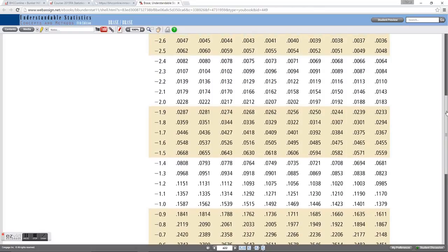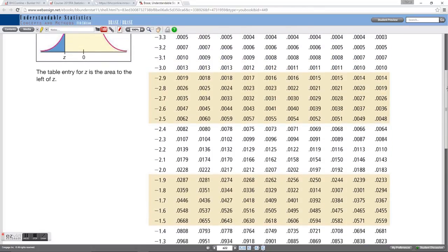So turning to the page, I'm not looking up z is negative 0.025, I'm looking up an area of 0.025. And searching through the table, I can find that area right here.